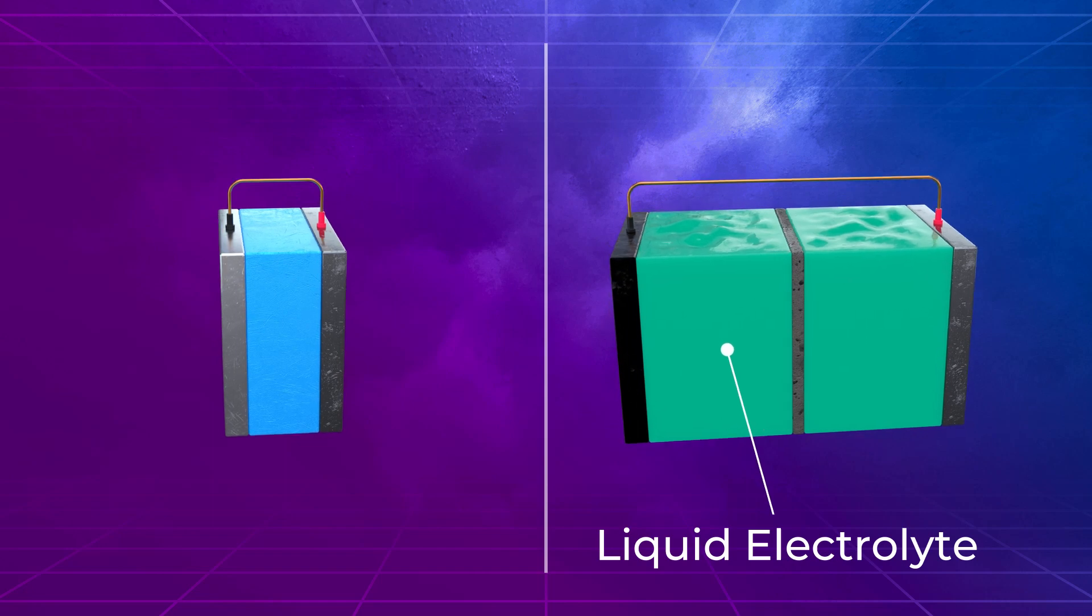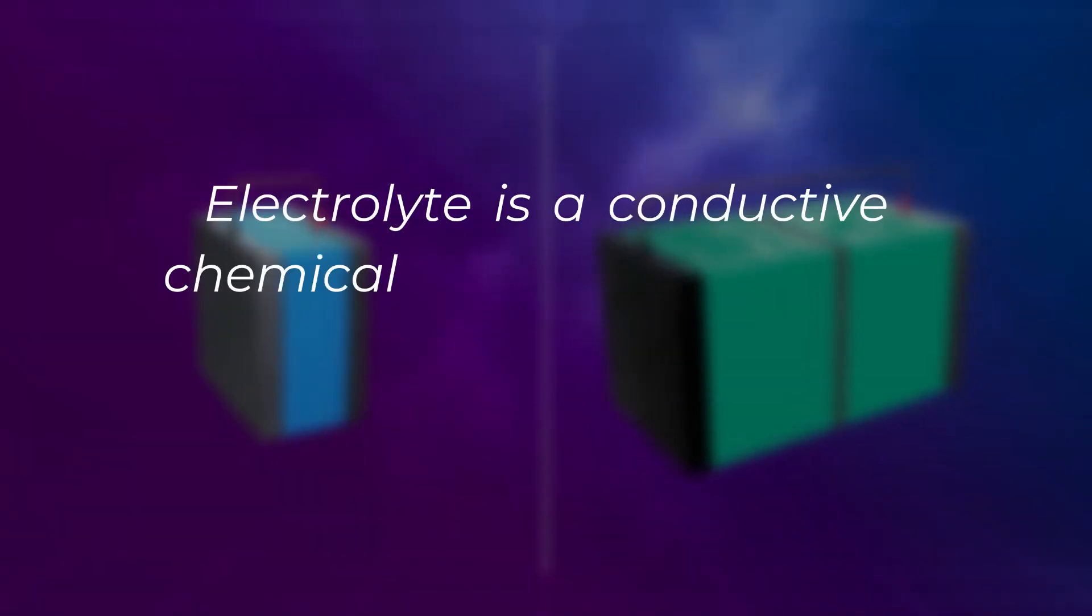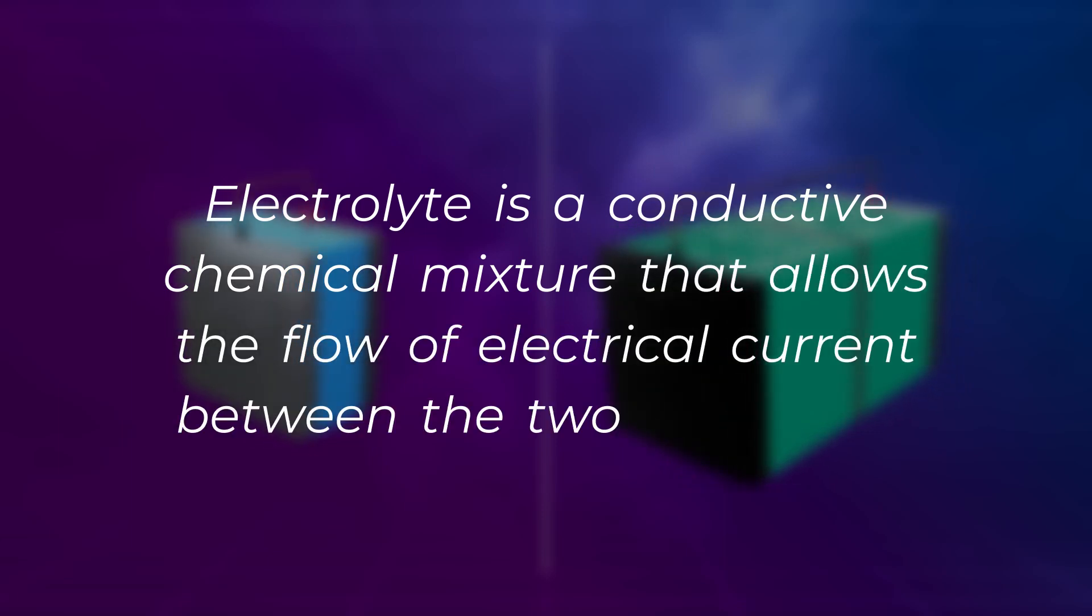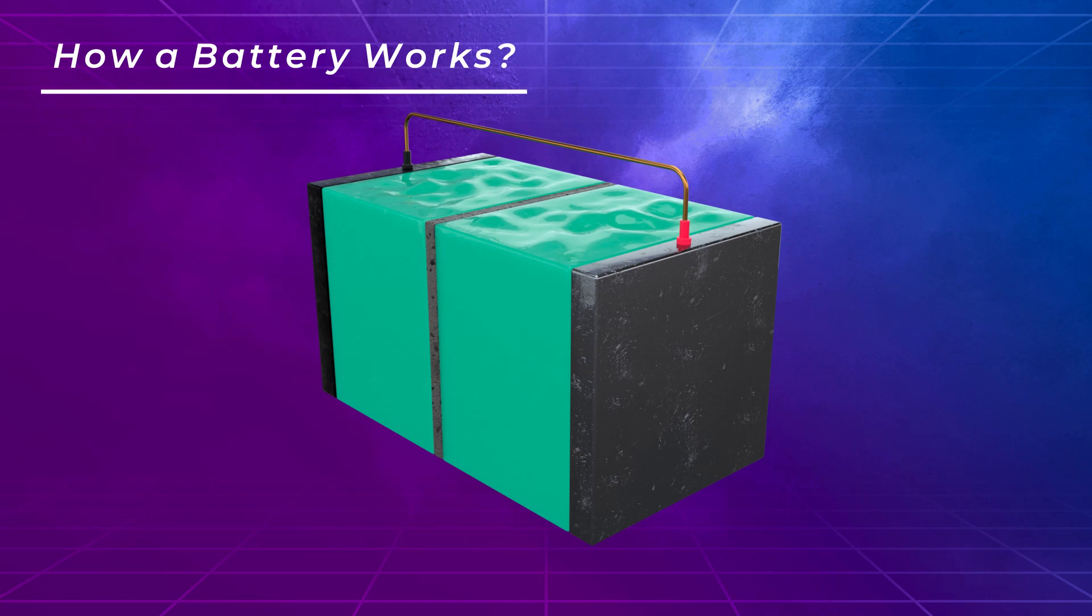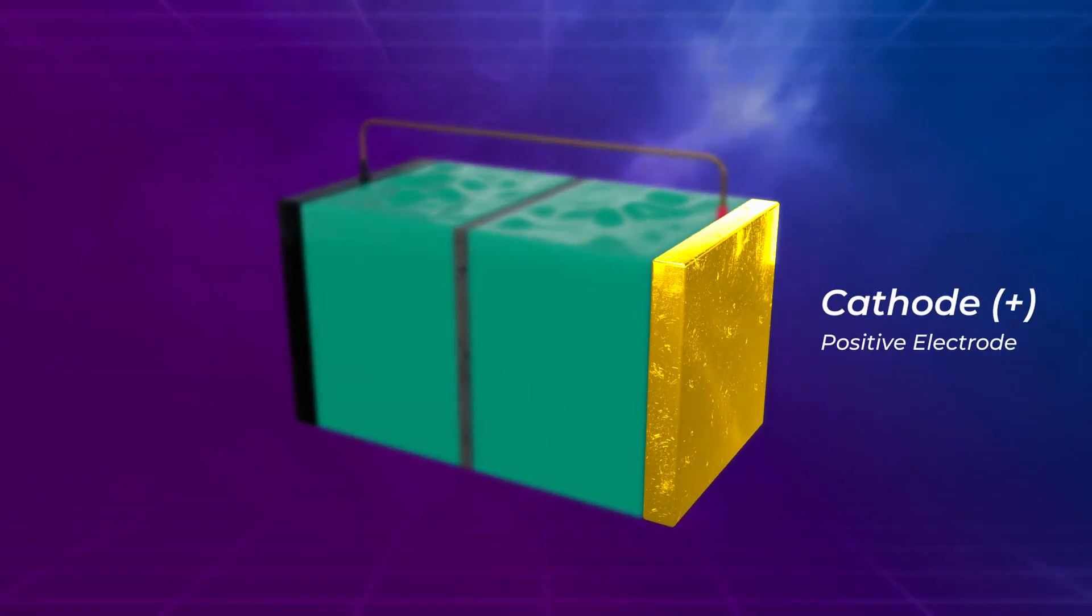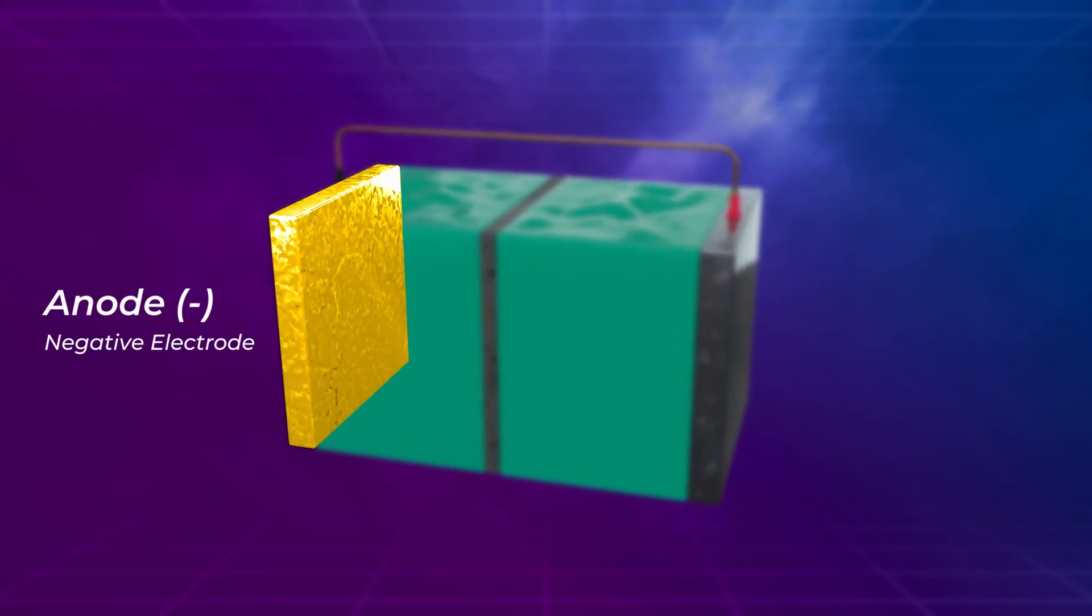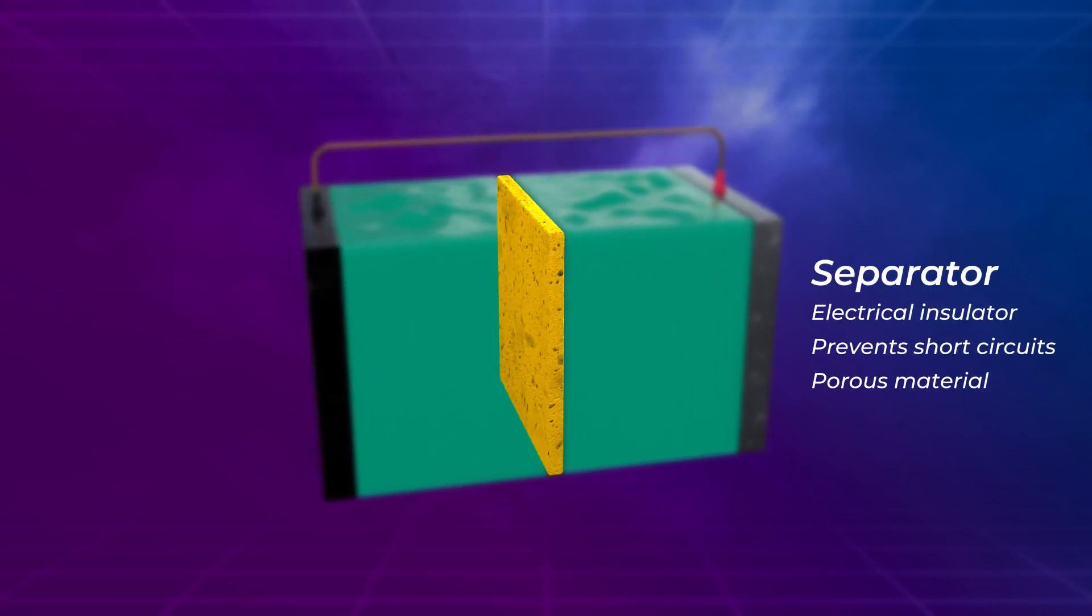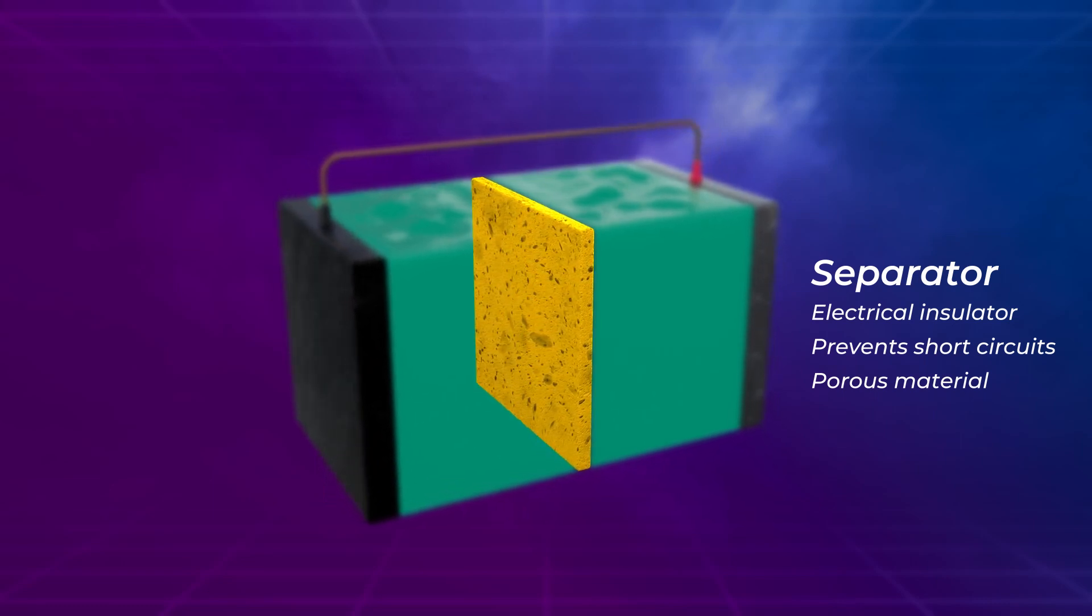A battery's electrolyte is a conductive chemical mixture that allows the flow of electrical current between the two electrodes. A lithium-ion battery consists of three main layers: a cathode or positive electrode, an anode or negative electrode, and a separator which is an electrical insulator that prevents short circuits and is made of a porous material.